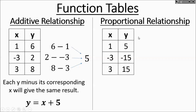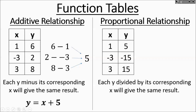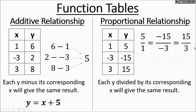For proportional relationships, instead of subtracting y and x, you're going to divide each y by its corresponding x, and they should all work out to the same thing. 5 divided by 1, negative 15 over 3, 15 over 3 — they all divide out to a common number. In this case, they all divide out to 5. So you're not adding 5; you're multiplying each input by 5. The equation that represents this rule is y equals 5 times x.